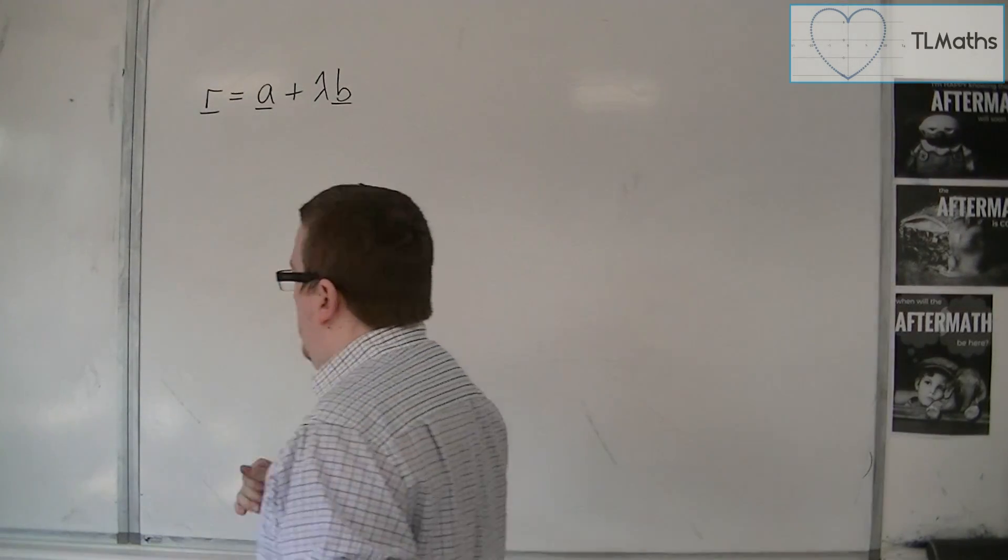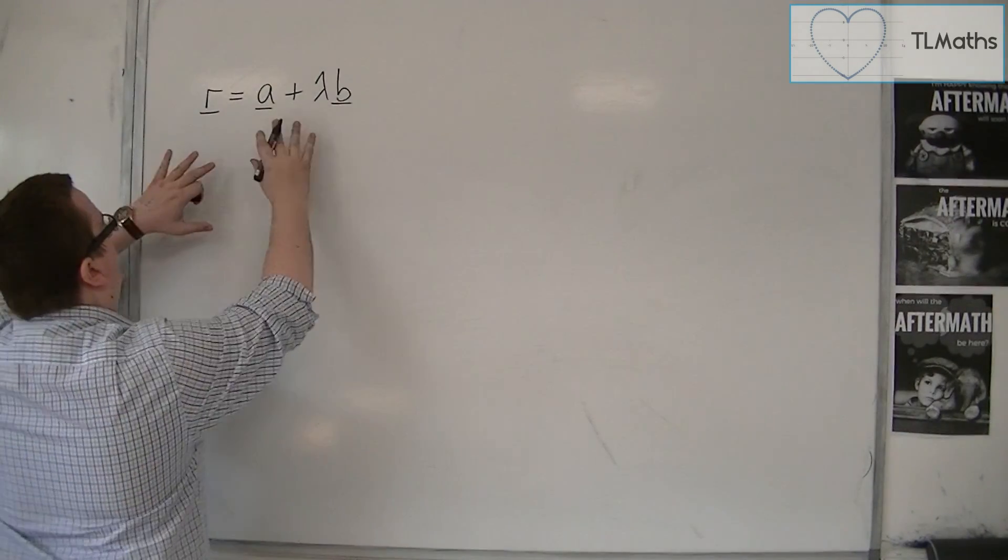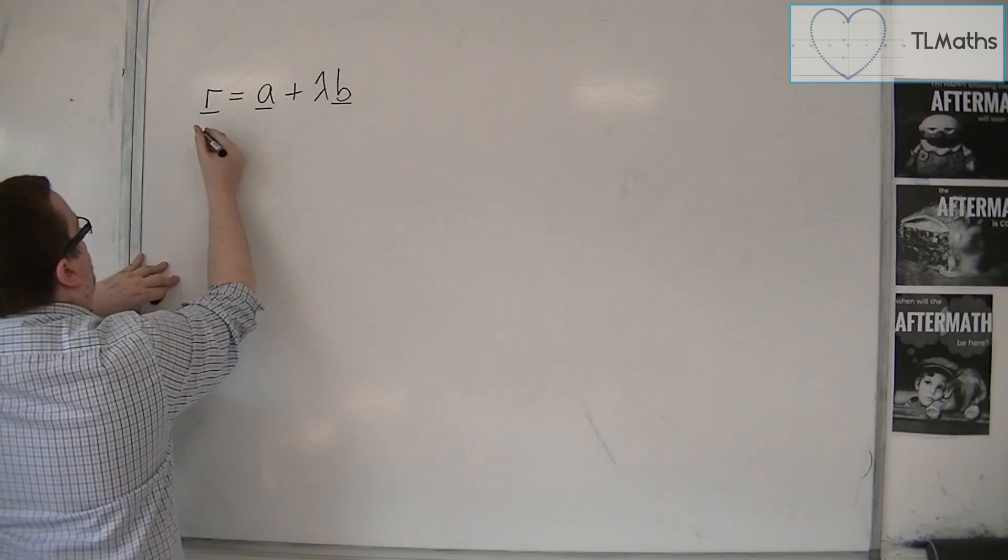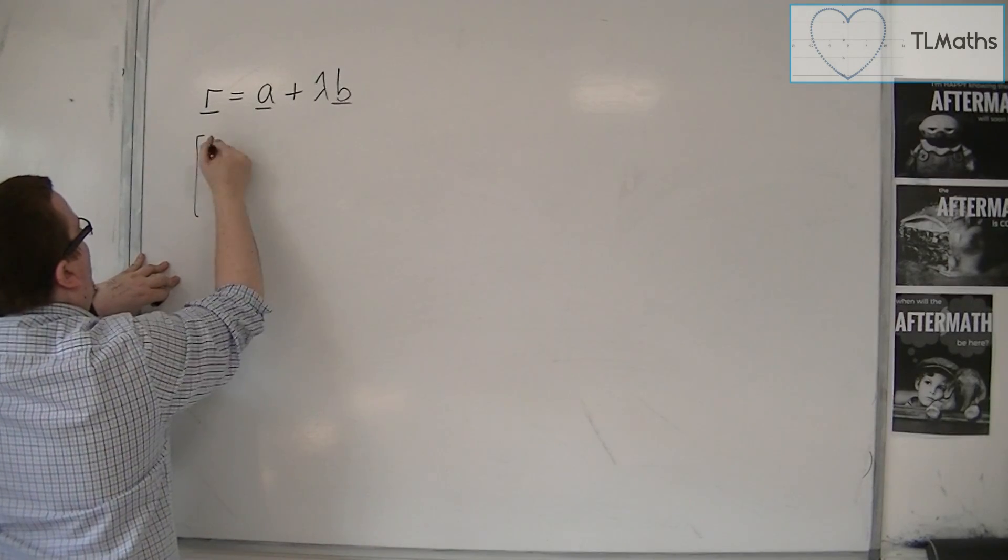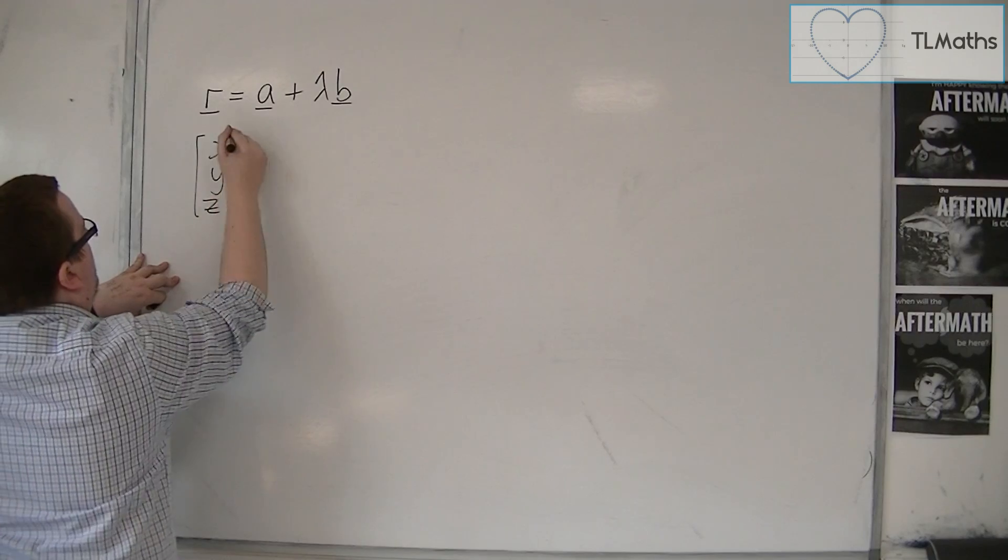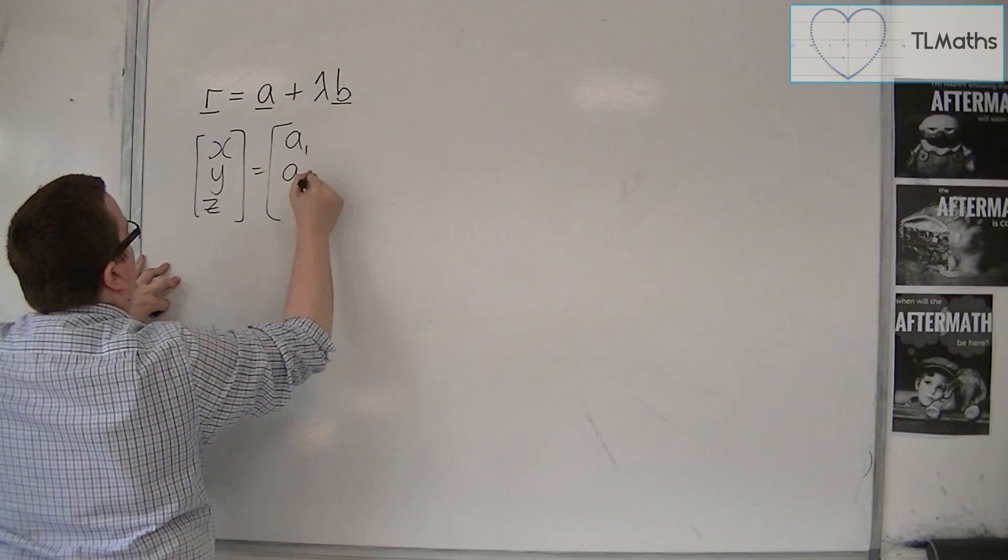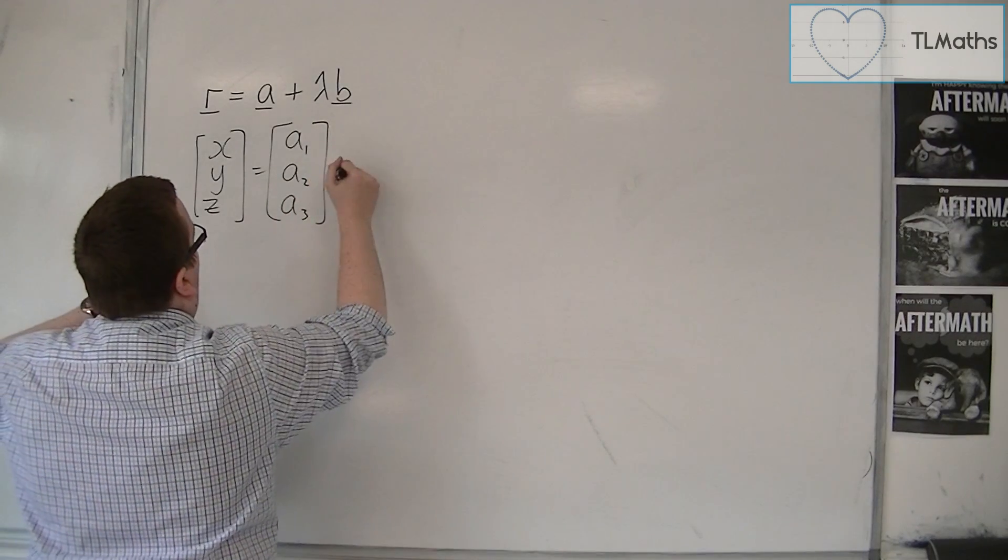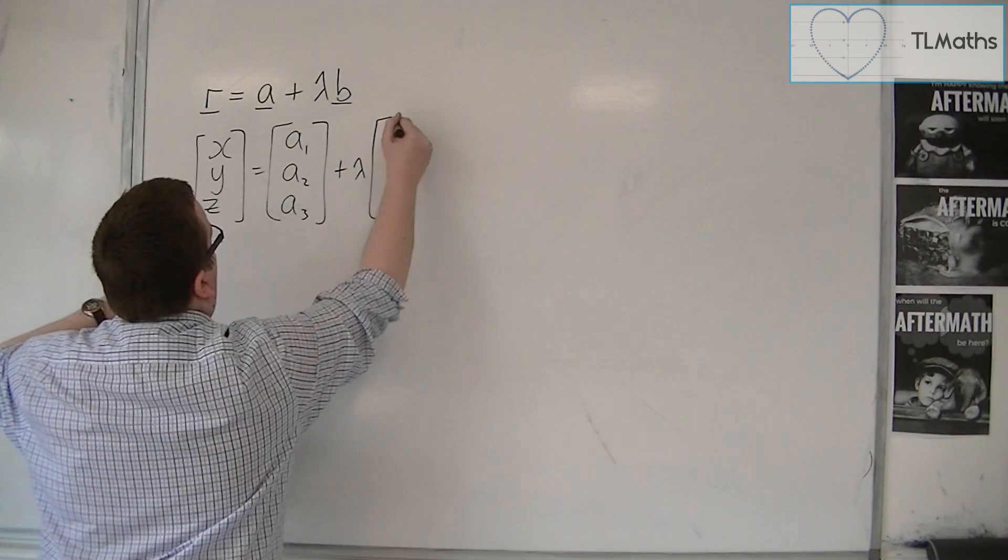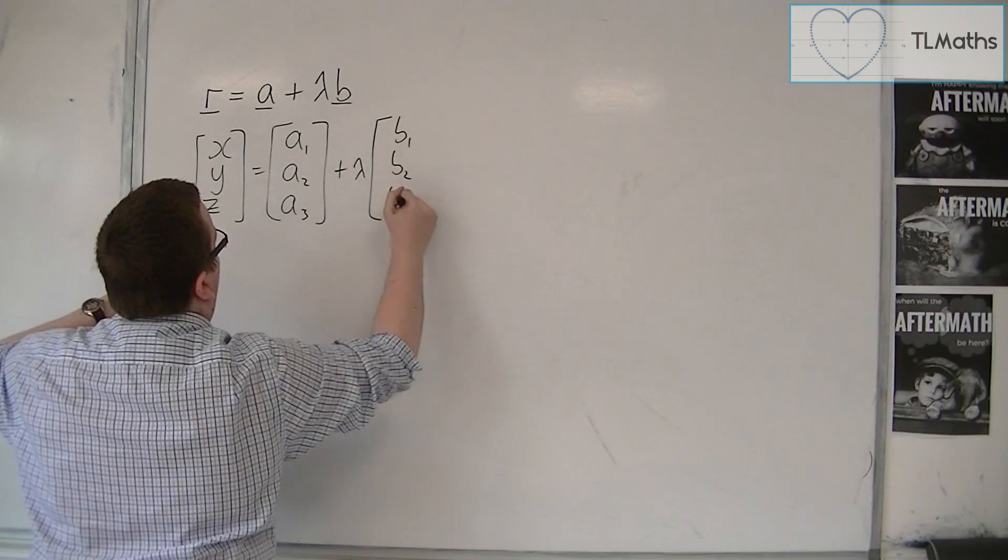So let's put this into column vector form. So we know that r is x, y, z, and let's say that a is a1, a2, a3, and then you've got lambda lots of b, so b1, b2, b3.